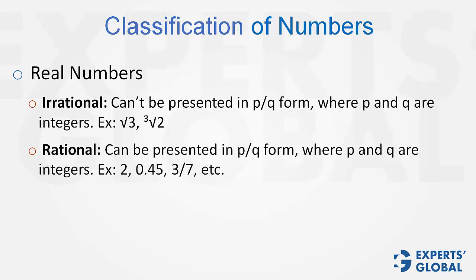Negative 2 is also a rational number because it can be represented as negative 2 upon 1. Negative 2 is an integer, 1 is an integer, so negative 2 is very much a rational number.